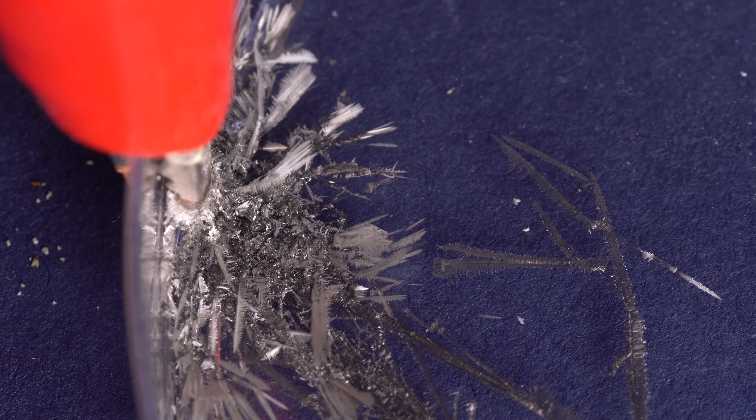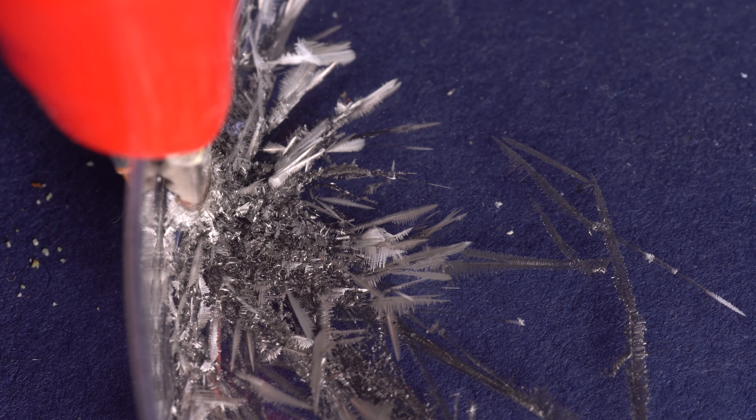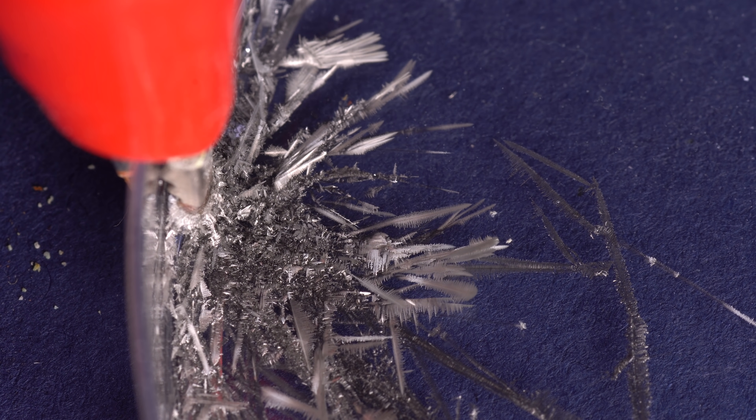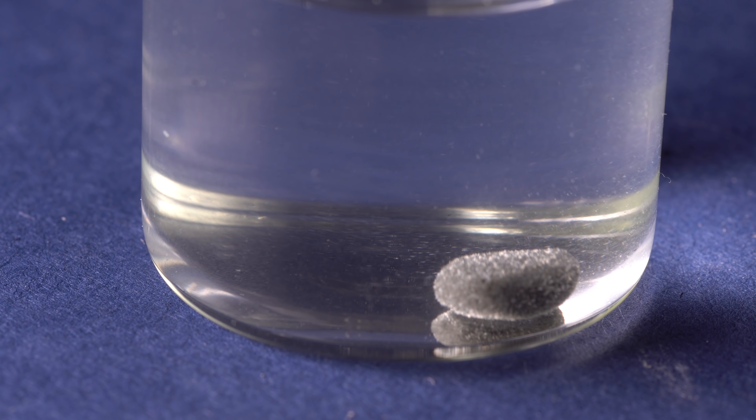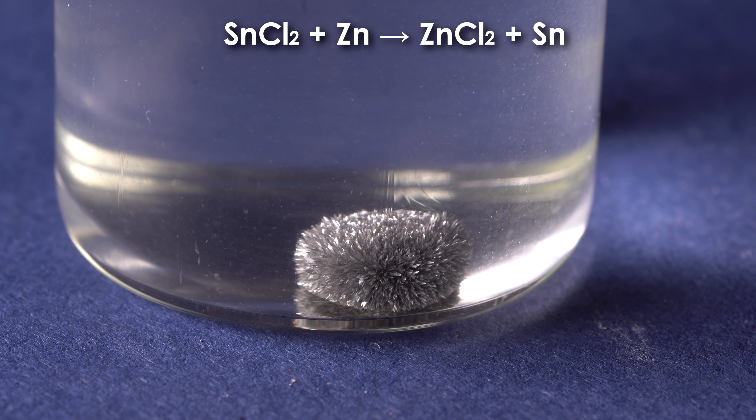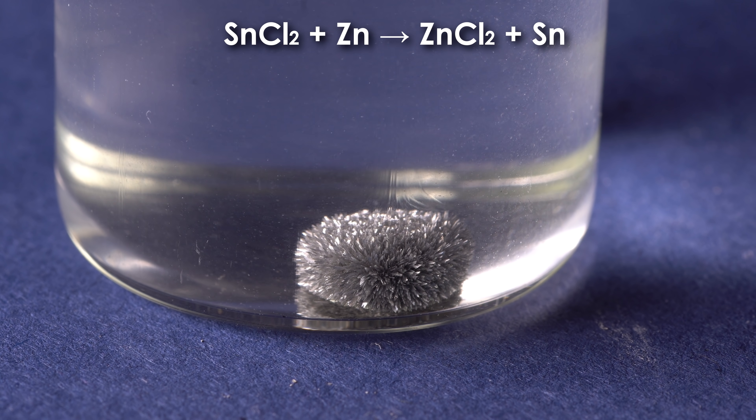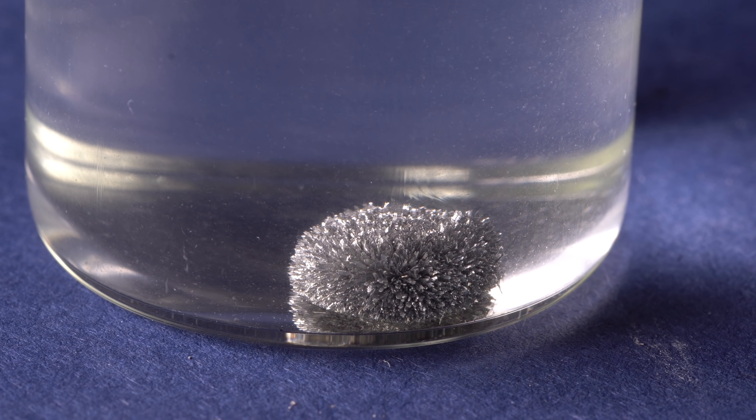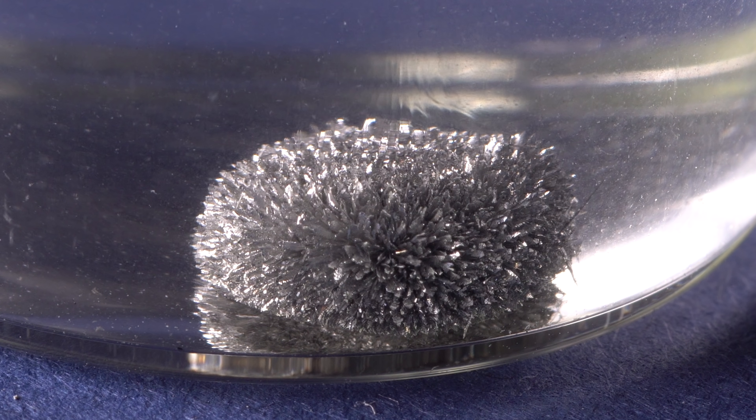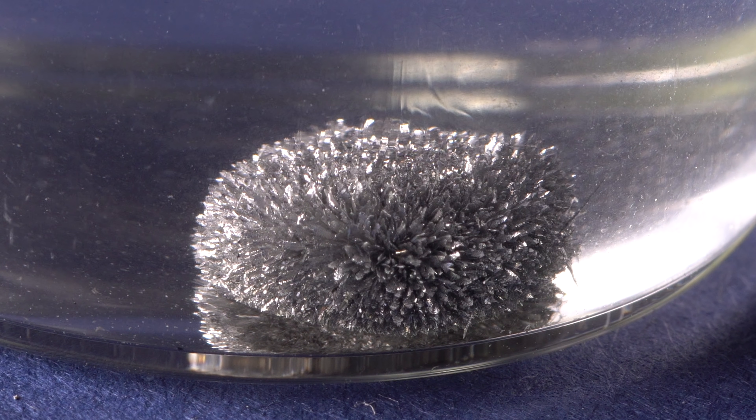Such a method of reducing tin under the influence of electricity is used in the production of tin cans. If you add a piece of zinc to the solution of tin chloride, it will begin to get covered with beautiful tin crystals. Zinc here will be oxidized to zinc chloride and tin will be reduced to metal. This results in beautiful tin dendrites.